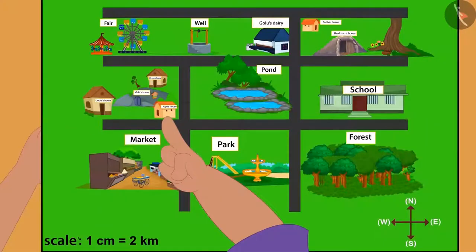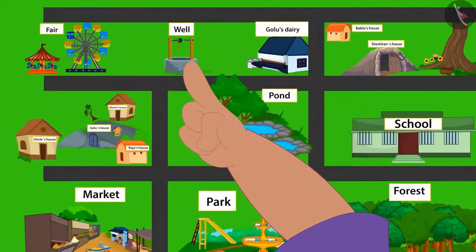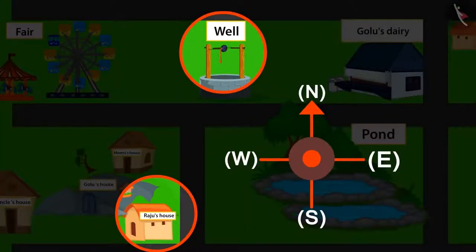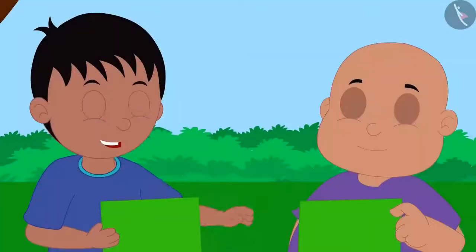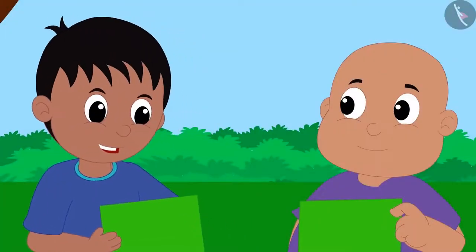This is your home, and this is the well. The well is above your home on the map. Which means, according to the compass, the well is towards North from your house. Bablu's answer is absolutely right.